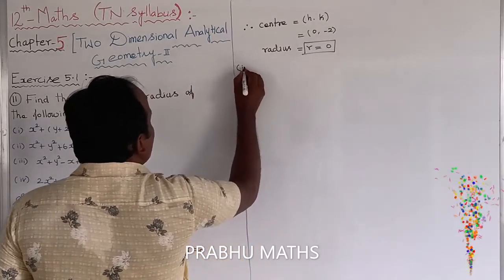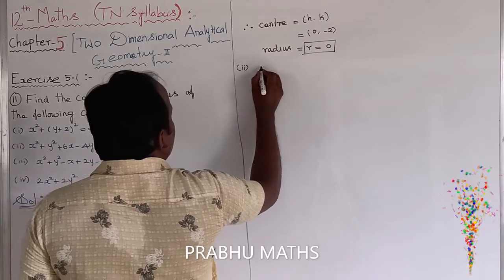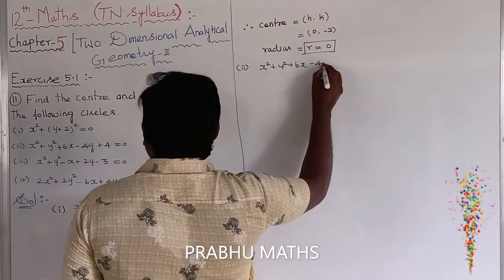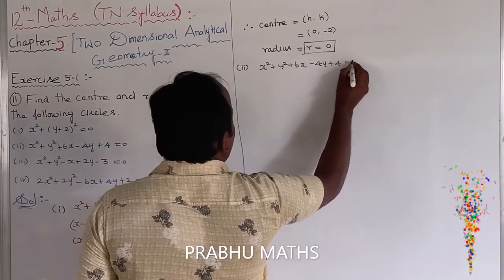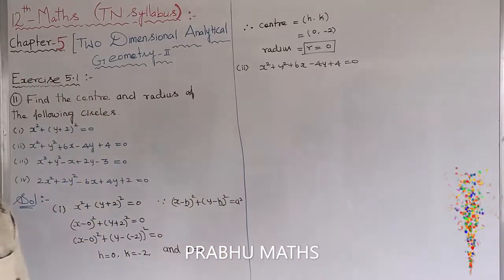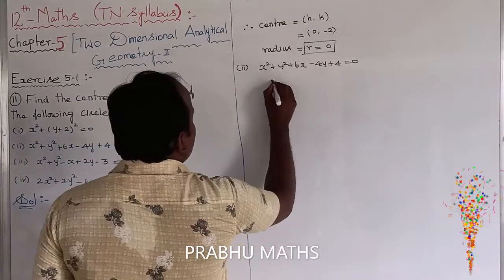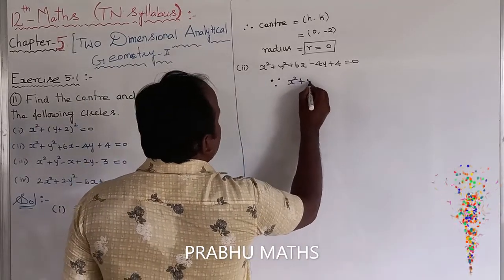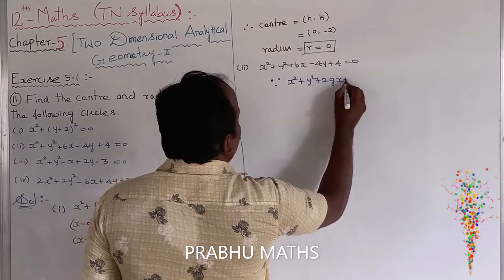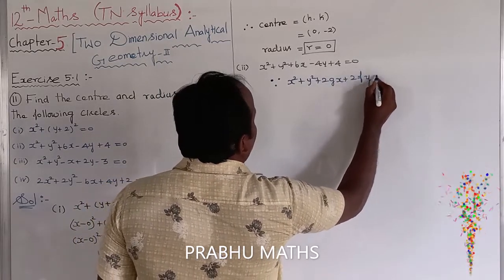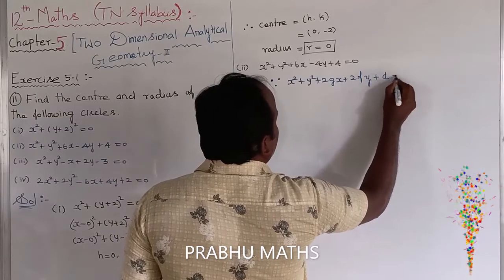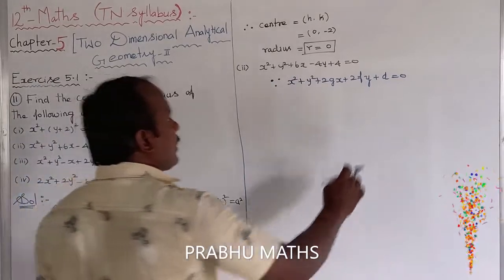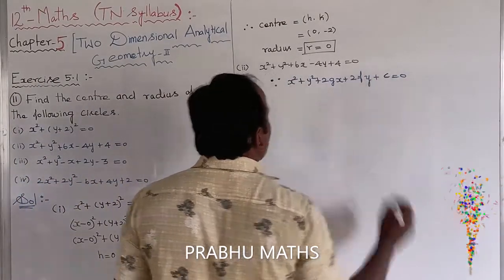Now going to the second subdivision. The given equation is x² + y² + 6x minus 4y + 4 = 0. The standard general form of the circle is x² + y² + 2gx + 2fy + c = 0, where c equals 0.